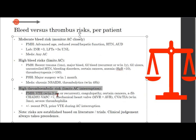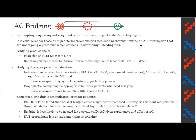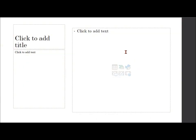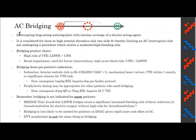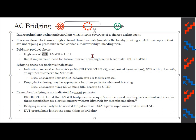Bridging is considered only in those at a high arterial thrombus risk — patients with a high thromboembolic risk where stopping their anticoagulant is basically not feasible based on how likely they are to have increased morbidity from that interruption. The bridging product choice: if a patient is at an excessively high risk for thromboembolism, we prefer enoxaparin over heparin because it's a better anticoagulant with stronger effects. Whereas with renal impairment, need for future interventions, or high bleed risk, we prefer heparin because of its shorter half-life.